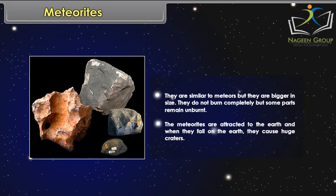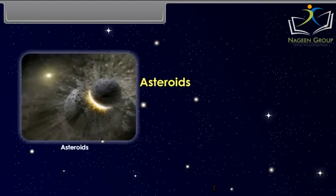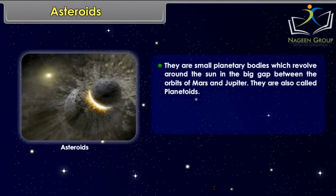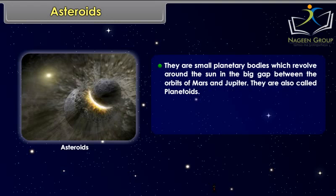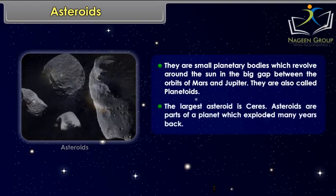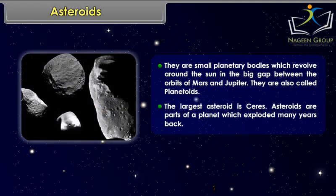Asteroids are small planetary bodies which revolve around the Sun in the big gap between the orbits of Mars and Jupiter. They are also called planetoids. The largest asteroid is Ceres. Asteroids are parts of a planet which exploded many years back.